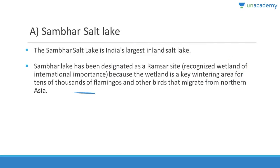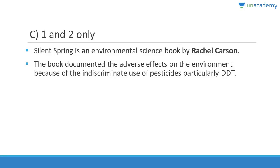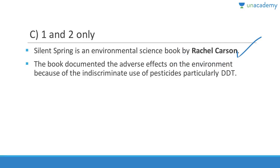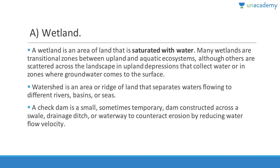Question 79: Which of the following are correctly matched — Chipko Movement with Sunderlal Bahuguna (correct), Silent Spring written by Rachel Carson (correct). Al Gore is a US Vice President and is incorrectly matched. Answer is C, 1 and 2. Silent Spring is an environmental science book by Rachel Carson that documented the adverse effects on the environment due to the discriminative use of pesticides, particularly DDT.